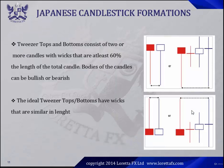Tweezers tops and bottoms consist of two or more candles with wicks that are at least 60% the length of the total candle. The bodies of the candles can be bullish or bearish — it doesn't matter, the bodies don't matter. The ideal tweezers top or bottom has wicks that are similar in length. Tweezers tops can be made up of several candles, just like morning stars and evening stars.